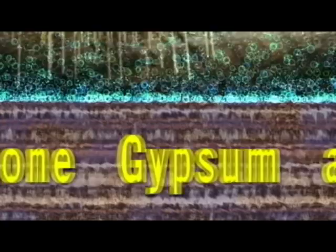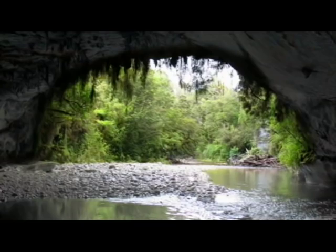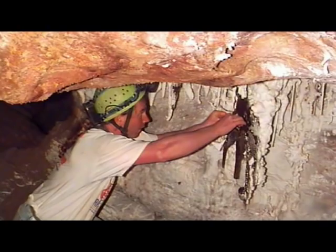Karst refers to landscapes formed primarily by the dissolving away of rock. Weak acids and rainwater eat away rocks such as limestone, gypsum, and other easily dissolvable materials. This results in typical features which include caves, sinkholes, and underground streams.